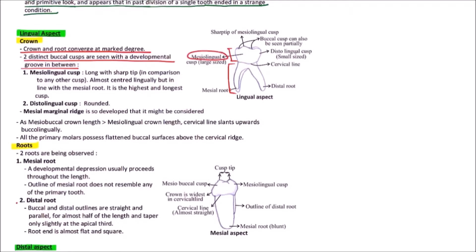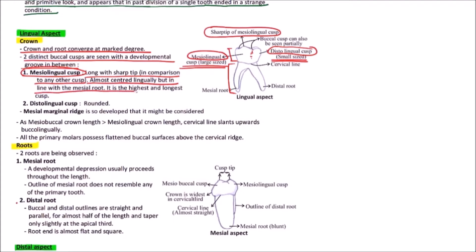The distolingual cusp is small in size while the mesiolingual cusp is large. The mesiolingual cusp is long with a sharp tip — it is very sharp in comparison to any other cusp and almost centered lingually but in line with the mesial root. It is the highest and longest cusp. The distolingual cusp is less developed and rounded. The mesial marginal ridge is well developed as the mesiobuccal crown length is greater than the mesiolingual crown length. The cervical line slants upward buccolingually.